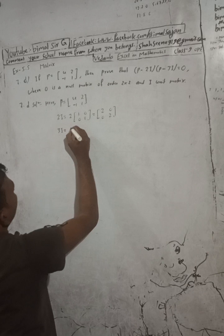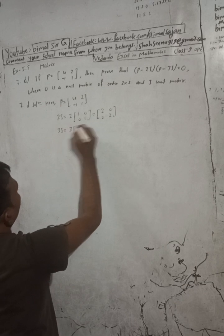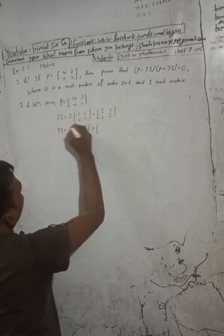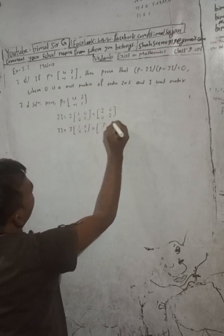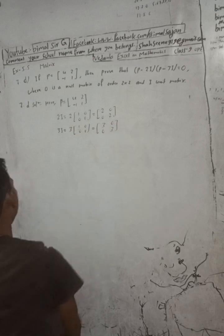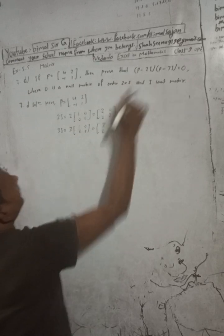Now you have to find P - 2I. The unit matrix I is [1 0; 0 1], so 2I equals [2 0; 0 2]. Similarly, 3I equals [3 0; 0 3].